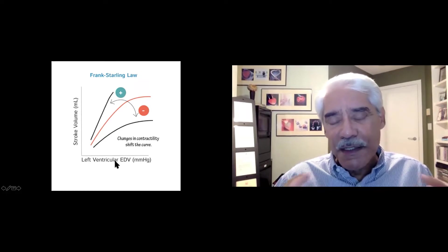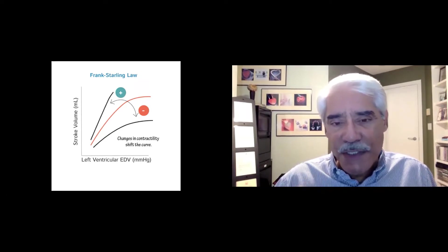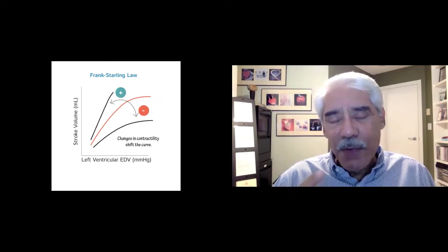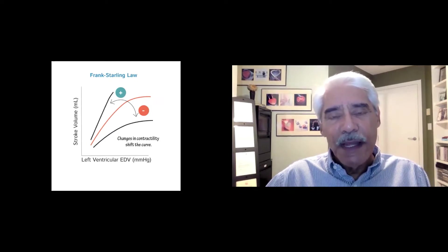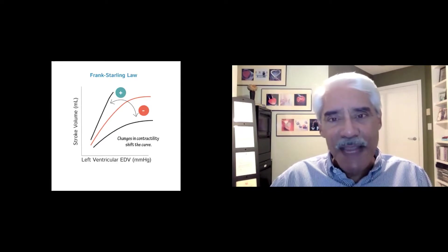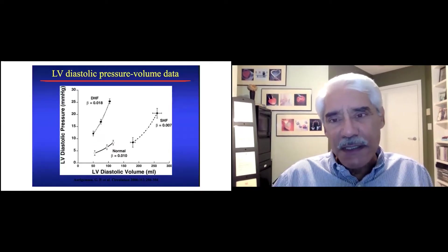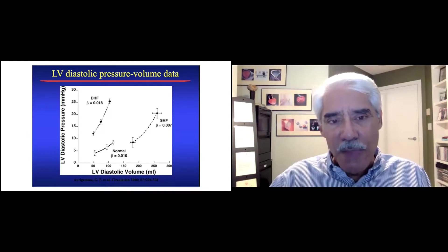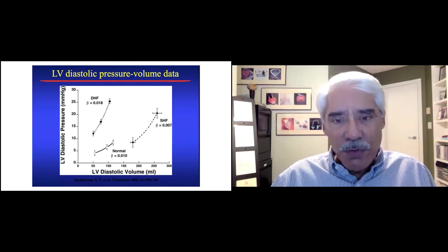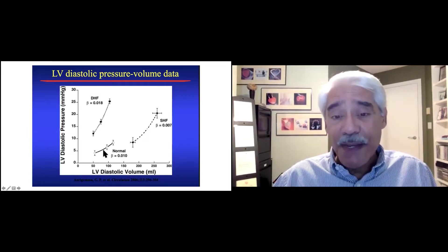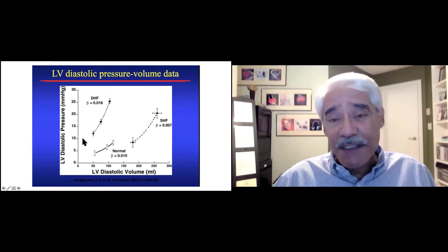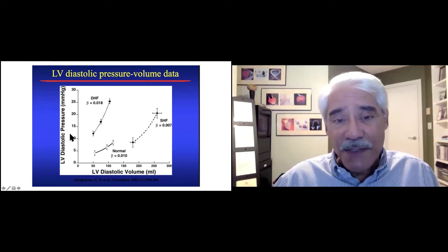Frank-Starling understood that there was a relationship between the left ventricular volume or pressure and stroke volume, and they equated the left ventricular end-diastolic volume and pressure as being essentially the same. Over the years, we have learned that is not the case. There is a very complex relationship between diastolic volume and diastolic pressure. In the normal situation, as the left ventricular diastolic volume increases, there is a somewhat proportional increase in pressure — that's a pressure-volume relationship.